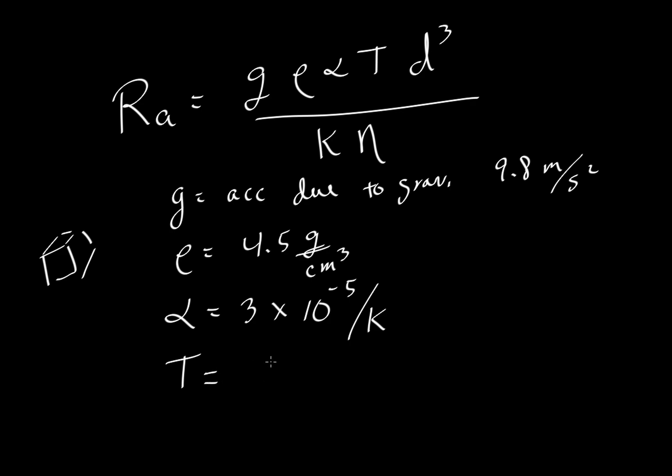Temperature that people often use for the mantle, it's probably a bit too low, but we'll use it here, is 1,673 kelvins. The viscosity is about 10²⁴ pascal seconds. And then the depth of the mantle is about 2,890 kilometers.